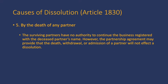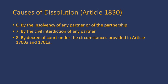Number 5: by the death of any partner. The surviving partners have no authority to continue the business registered with a deceased partner's name. However, the partnership agreement may provide that the death, withdrawal, or admission of a partner will not affect a dissolution. Number 6: by the insolvency of any partner or of the partnership. Number 7: by the civil interdiction of any partner. Number 8: by decree of court under the circumstances provided in Article 1700A and 1701A.